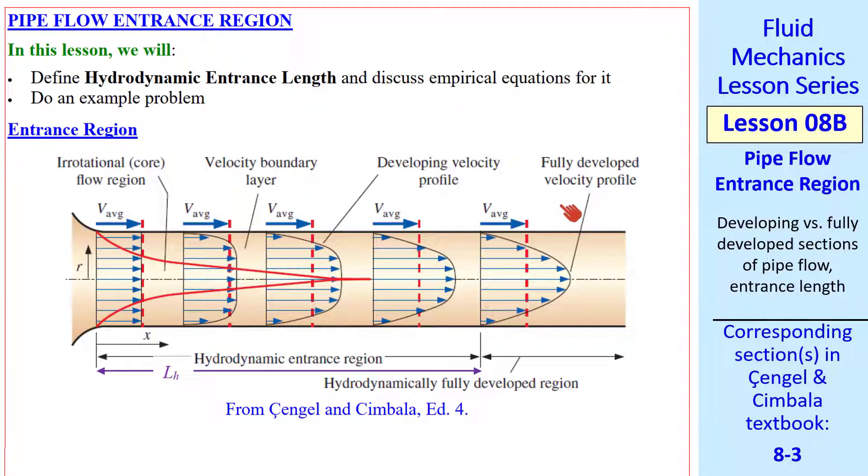A fully developed velocity profile means that from here downstream this velocity profile no longer changes. There still is a pressure drop downstream because of friction along the pipe walls. The region from the entrance to the location where it is fully developed is called the hydrodynamic entrance region.